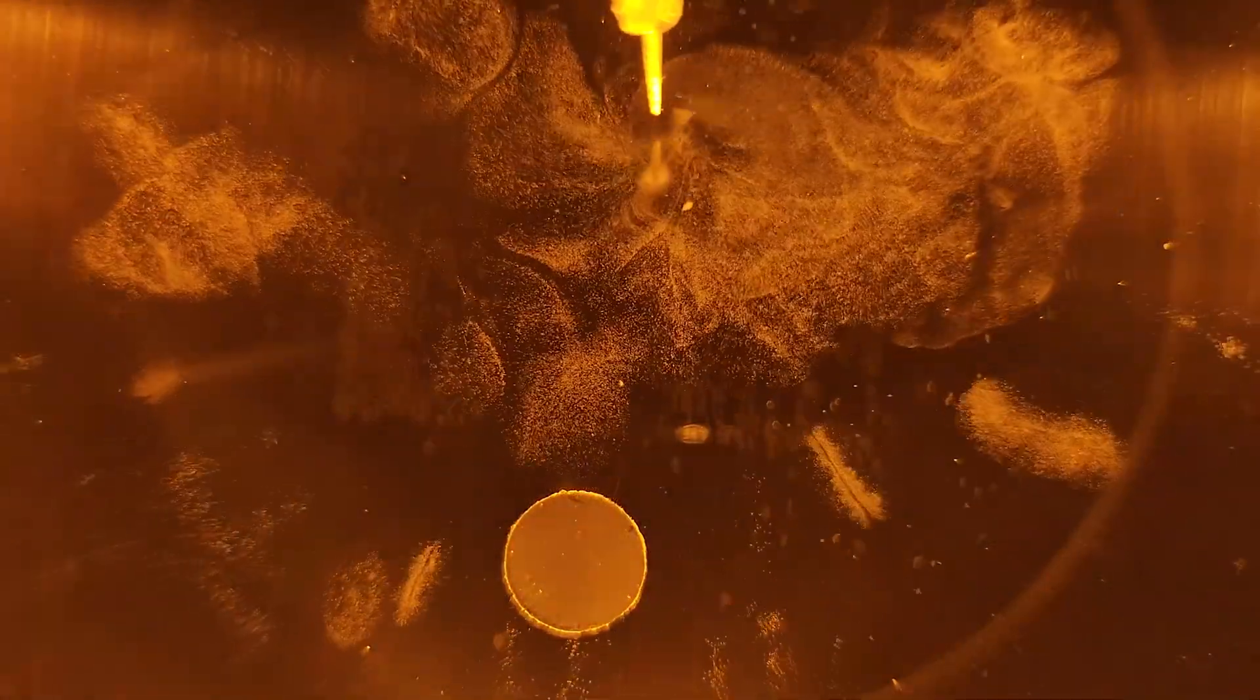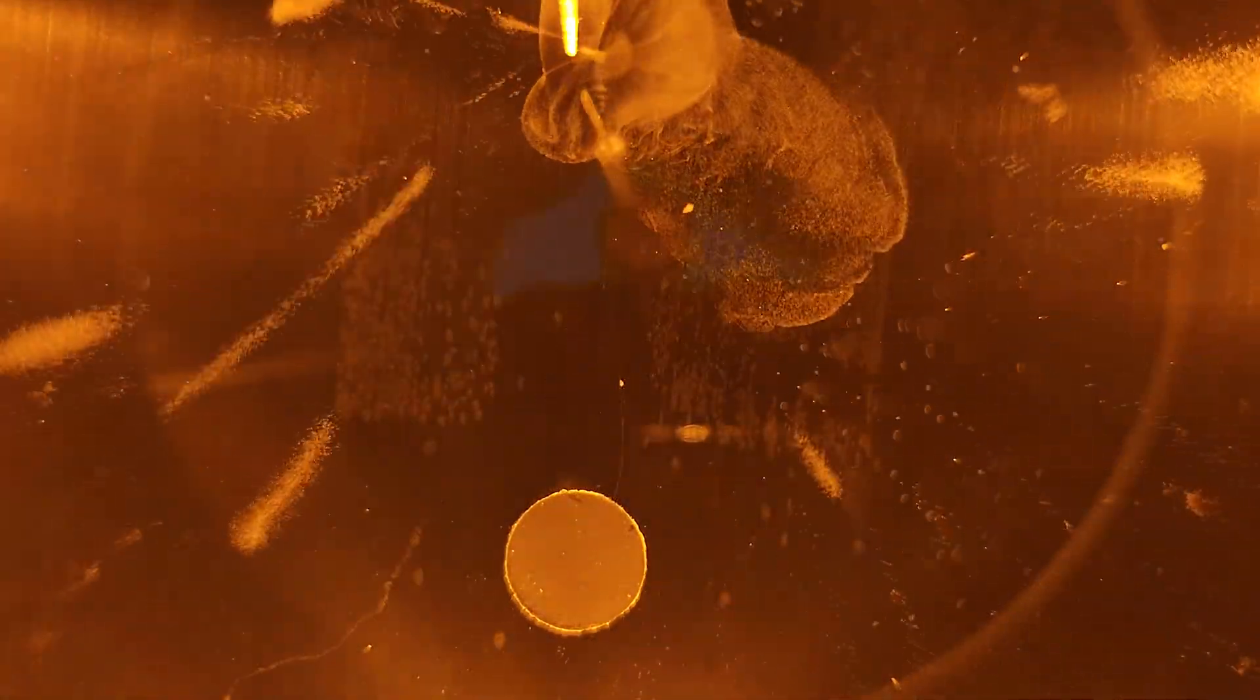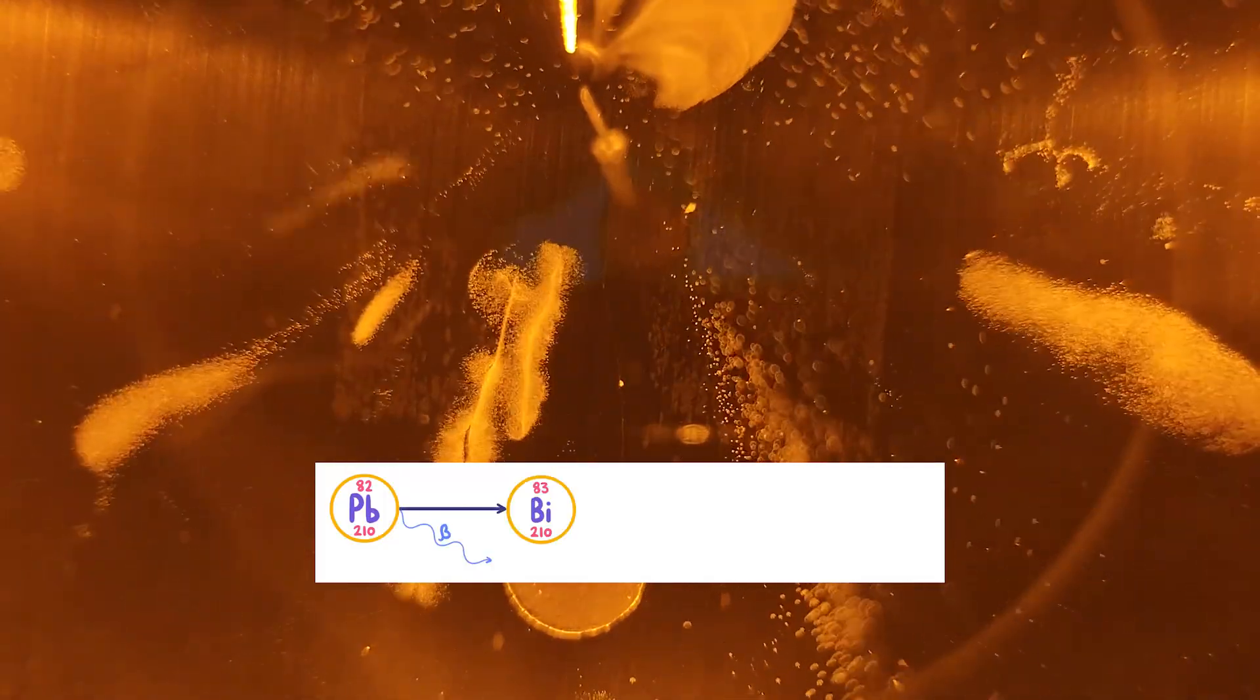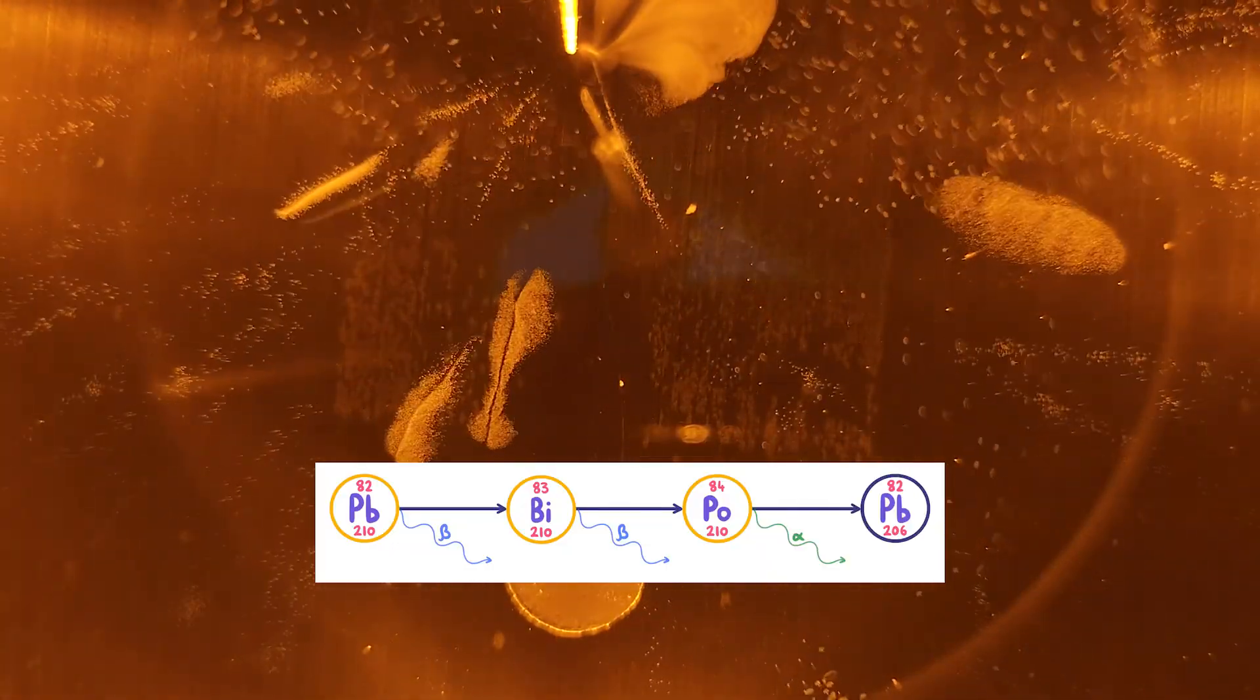Let's see what happens when we insert a sample of radioactive lead-210. Lead-210 beta decays into bismuth-210, which beta decays into polonium-210, which alpha decays into stable lead-206, ending the decay chain.